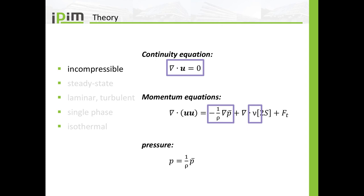As for the equations that are being solved, incompressibility means that the continuity equation reduces to the simple equation where the divergence of the velocity is zero. In the momentum equations you can divide by the constant density and what you end up with is a pressure gradient term with the density. In the diffusion term you have the kinematic viscosity instead of the dynamic viscosity. The value p that we will use in the simulations is not the pressure but rather the pressure divided by density — we have to keep that in mind.